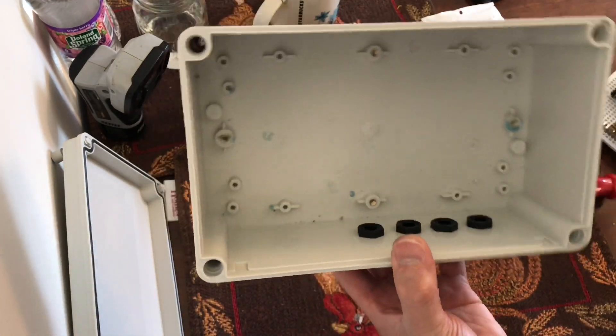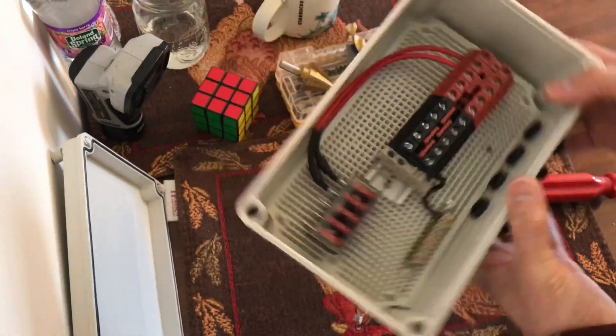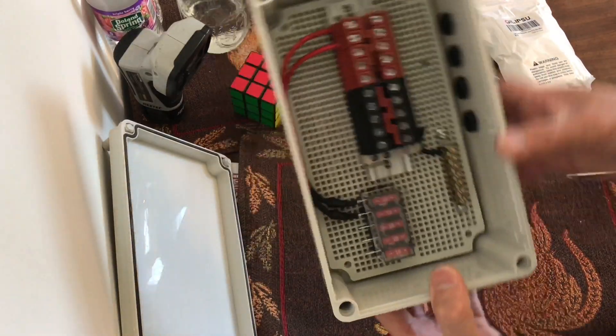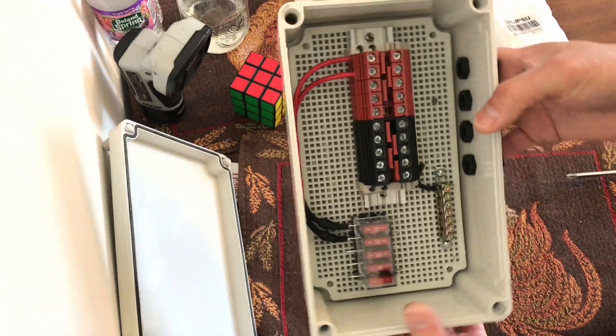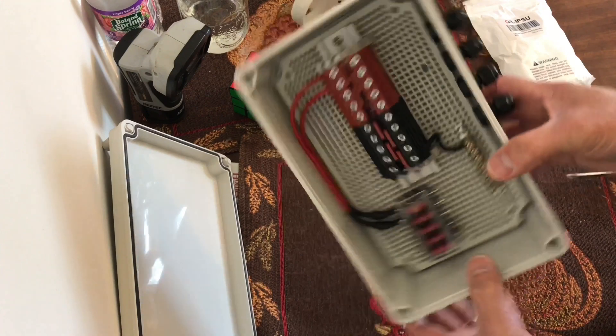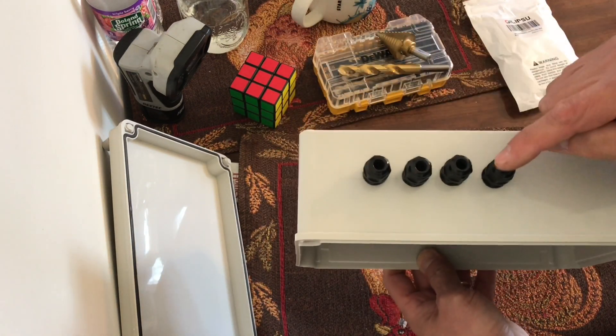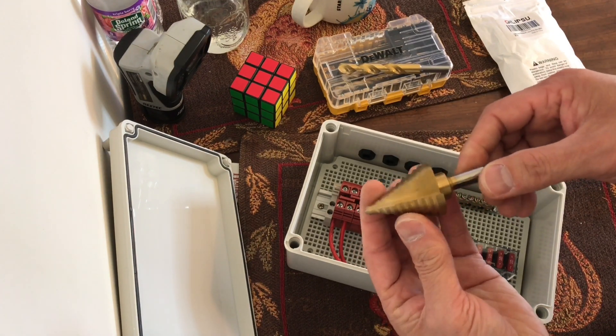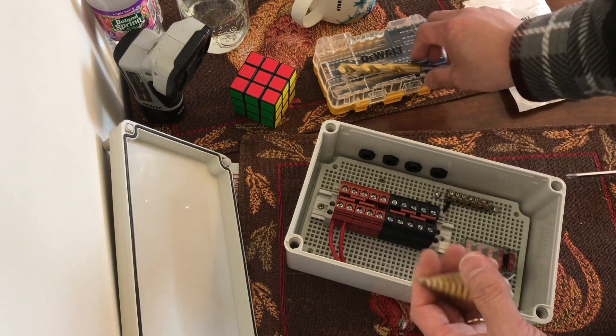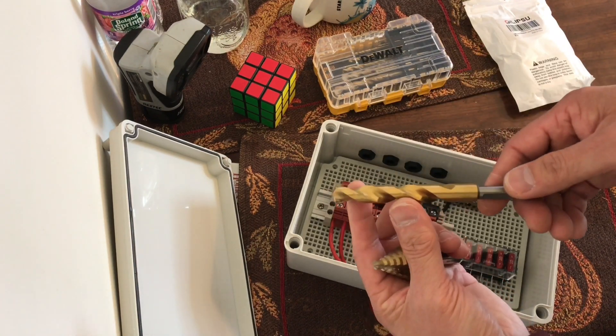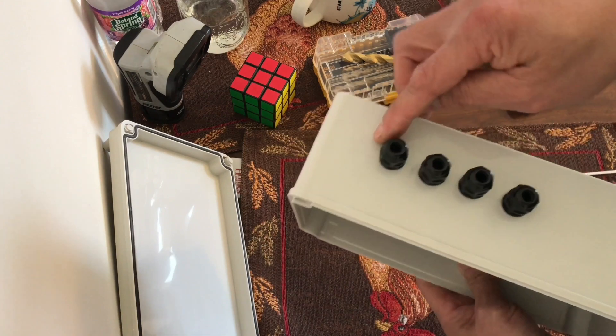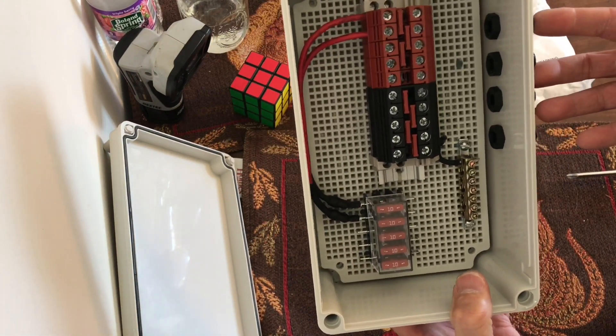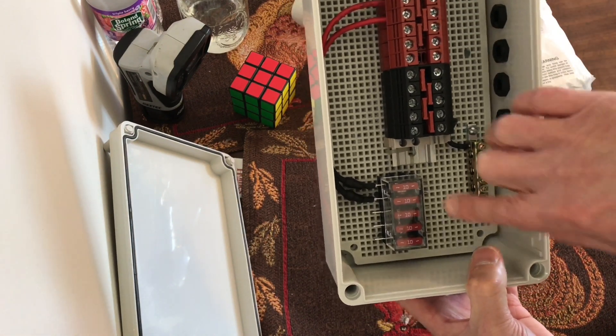Here's the box, let's assemble it. Here it is, completed combiner box. The holes for the cable glands, I started using this step up drill bit and realized I just need a half inch drill bit. So drilled four of them right here, that's where the solar panels will be coming in.